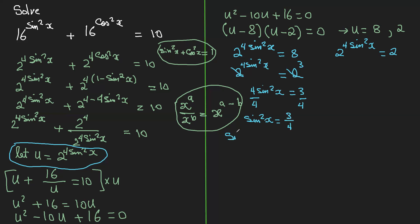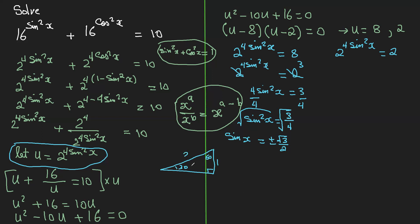Square rooting both sides gives sine x equals plus or minus square root of 3 over 2. We know from the special angle triangle of 30-60-90 with sides 1, 2, root 3 that the angle with a sine of root 3 over 2 is 60 degrees, since sine 60 equals root 3 over 2.